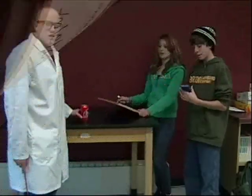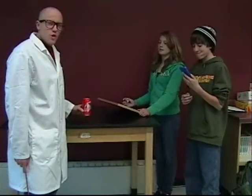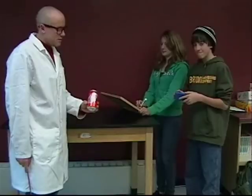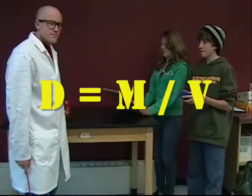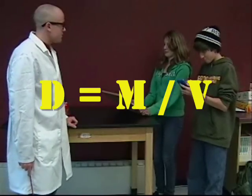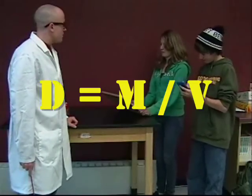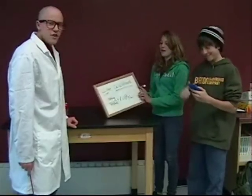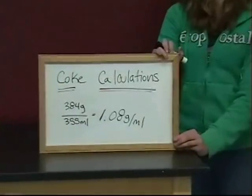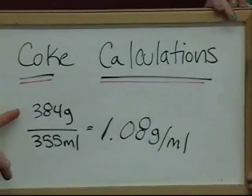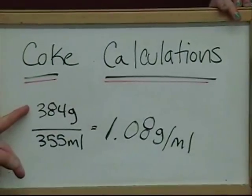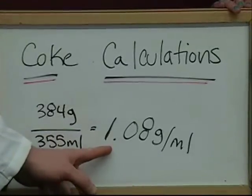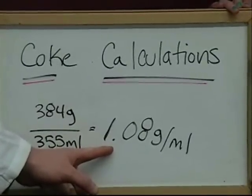Now we're going to perform the same density calculations to find the density of our other object, the regular Coke. Brooke divided the mass of our Coke by its volume to find the density of the Coke: 1.08 grams per milliliter. Another great job.